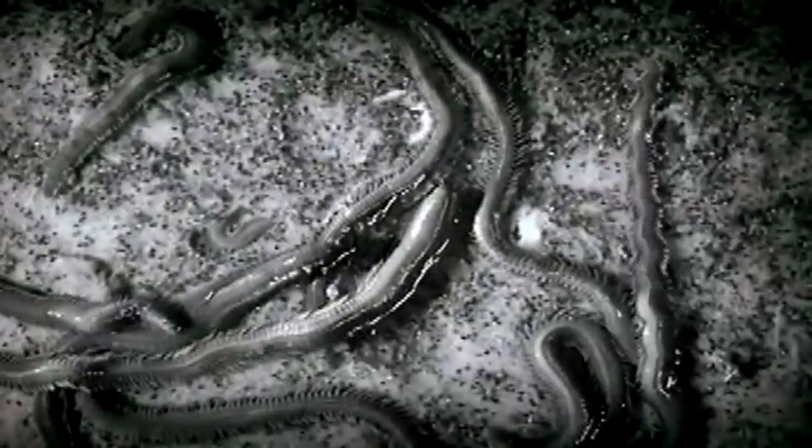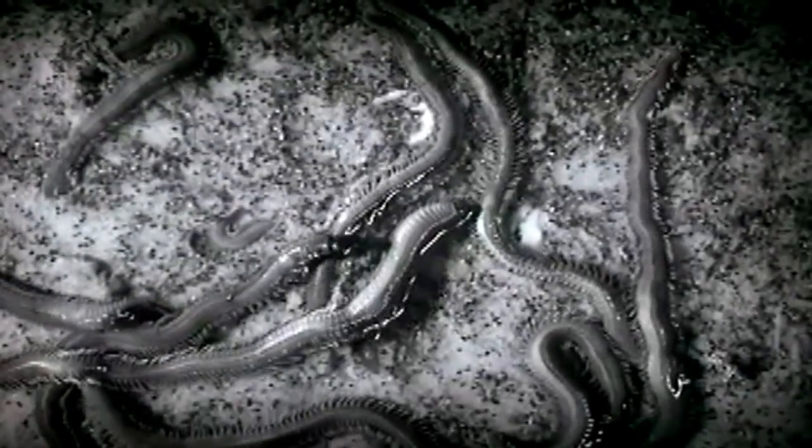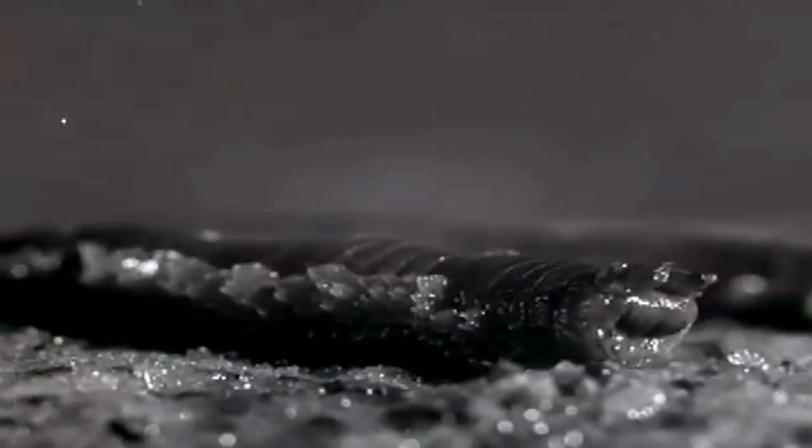Most worms have no eyes at all. The clam worm does have eyes, but they are so crude that he doesn't see very clearly. To the clam worm, a human and a big fish probably look alike—both are just shadows to him.